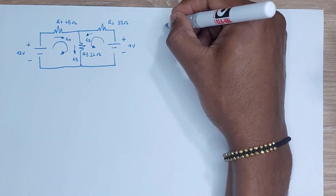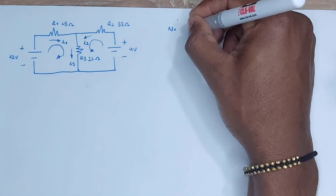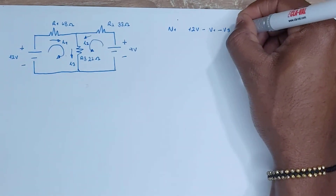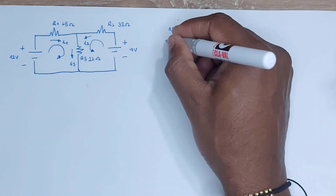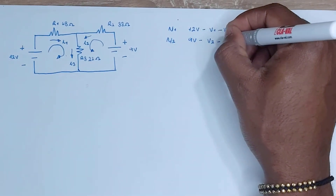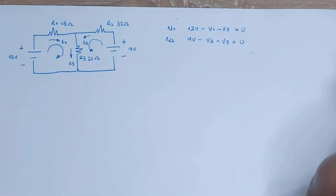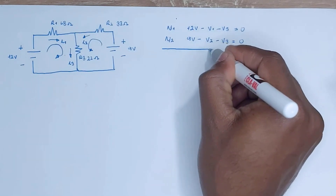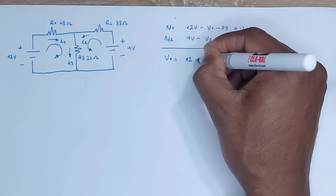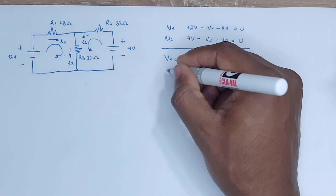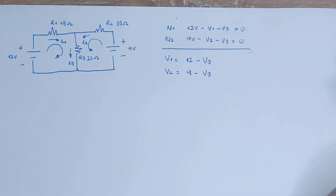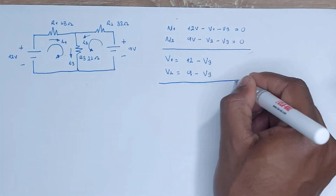Now we have all the information we need. Let's write down our KVL equations. For network 1: 12 volts minus voltage 1 minus voltage 3 equals 0. For network 2: 9 volts minus voltage 2 minus voltage 3 equals 0. We want to find voltage 1, voltage 2, and voltage 3. Isolating voltage 1 and voltage 2: voltage 1 equals 12 minus voltage 3, and voltage 2 equals 9 minus voltage 3. We have a common unknown value — voltage 3.